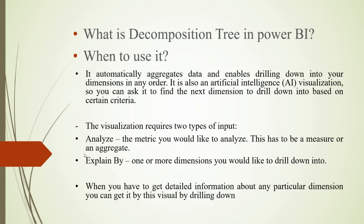In the Analyze field, you place the metric you would like to analyze — this has to be a measure or aggregate. For example, if we have data of sales and products, what we need to analyze is sales, profit, and cost. These types of measures need to be put in the Analyze section. Then, Explain By takes one or more dimensions you would like to drill down into.